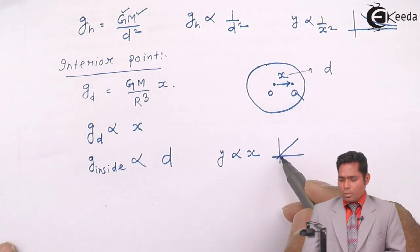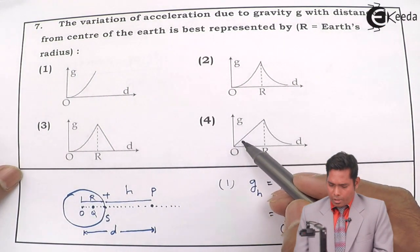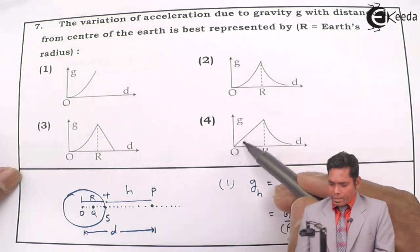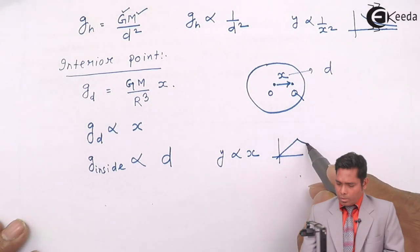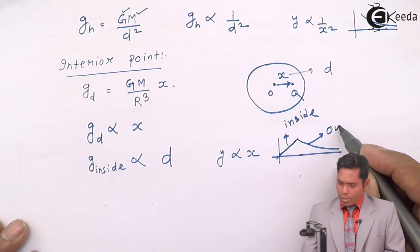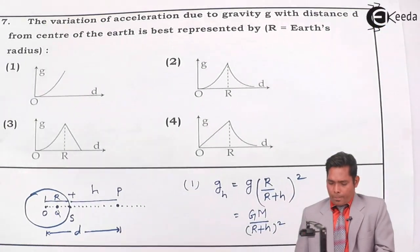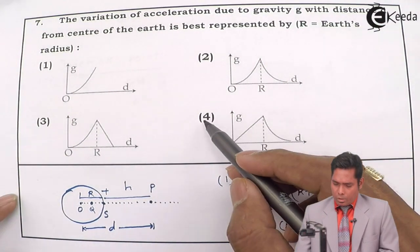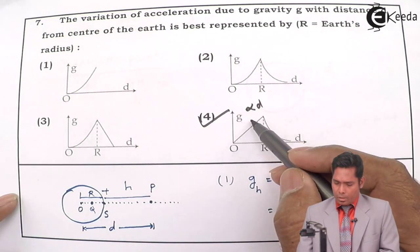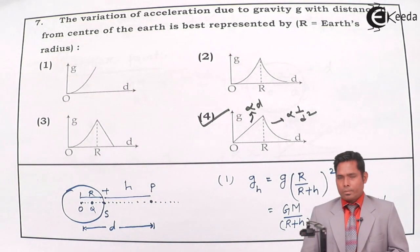This is like y is proportional to x — the graph is a straight line passing through the origin at 45 degrees, bisecting the plane. So for inside points the graph is a straight line through the origin, and for outside points it follows the 1/d² curve. Therefore this answer is correct: inside, g is directly proportional to d; outside, g is inversely proportional to d². Thank you.